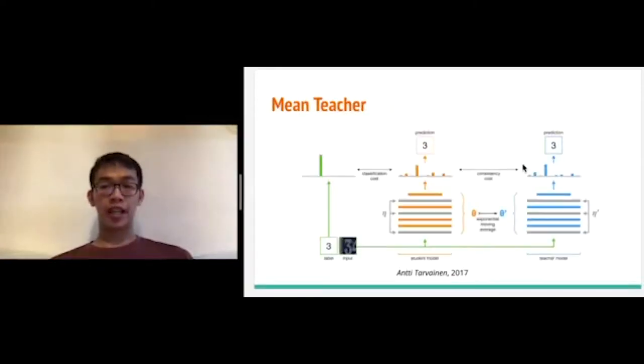I believe many of us have known the Mean Teacher system already, because it is a classic semi-supervised learning technique. Its idea is similar to the guided learning algorithm, but instead of constructing a new teacher model like guided learning, Mean Teacher simply uses the exponential moving average of the student model to construct the teacher model. The main idea is to let the student learn from the predictions generated by the teacher model, but we don't really need to train a teacher model separately.